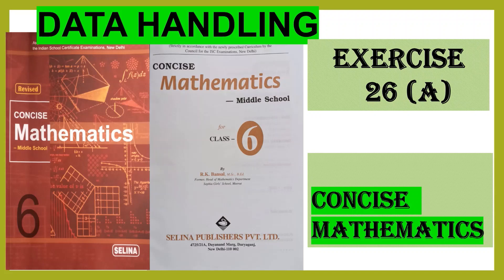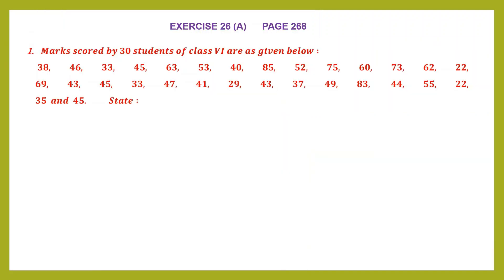Hello students, let's do data handling exercise 26a, page number 268. Question 1: marks scored by 30 students of class 6 are given below. We have been given some data here, and this is called the raw data. These are observations collected as a result of some kind of study or research. Looking at this, we are going to answer a few questions.